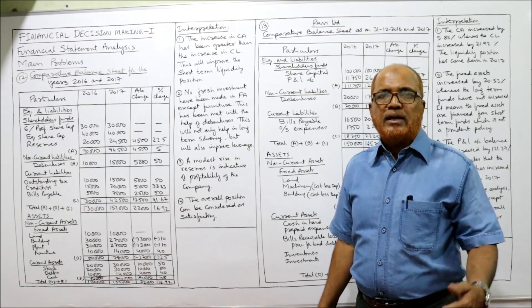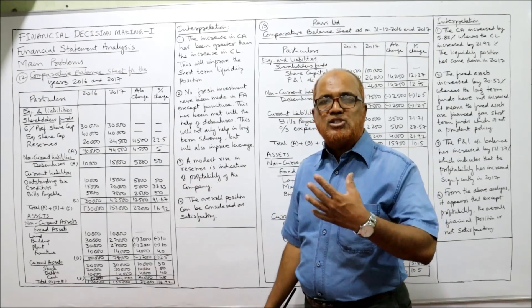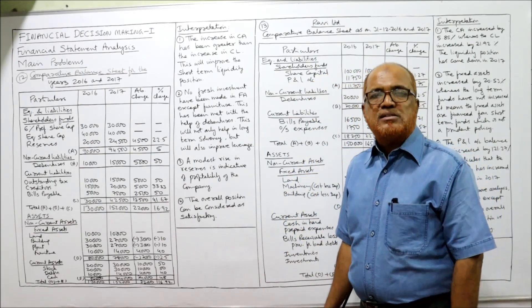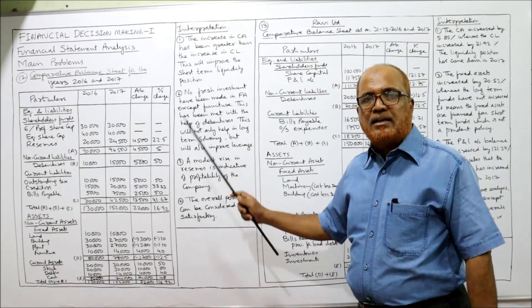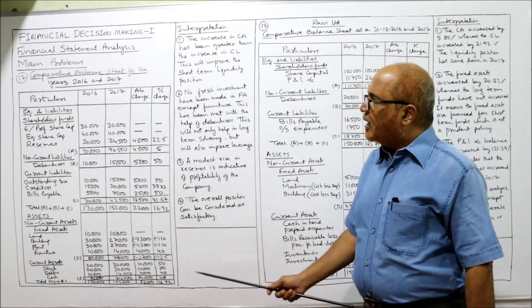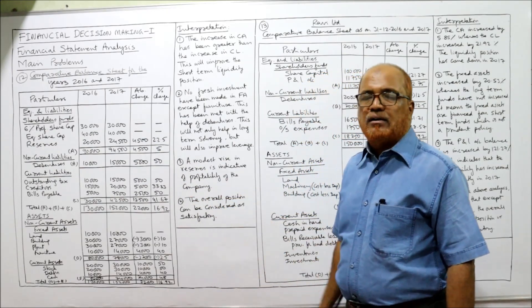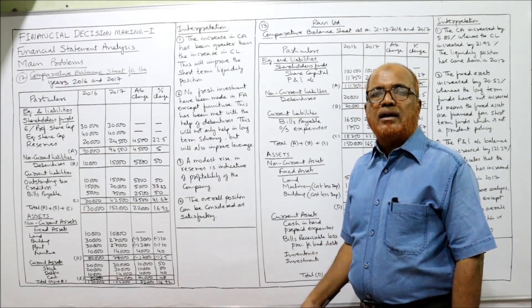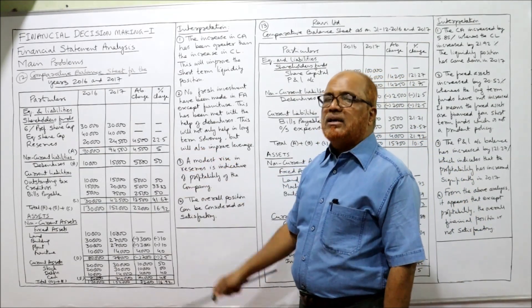Furniture is purchased from debentures, which is a good policy. It will bring leverage — using debt in the capital of the business to increase the return. A modest rise in reserves is indicative of profitability. Reserves increased from 20,000 last year to 24,500 current year — an increase of 4,500, which is 22.5%. This indicates a moderate increase in profitability. The overall position can be considered satisfactory — from this comparative analysis we can conclude the financial position is satisfactory in 2017.